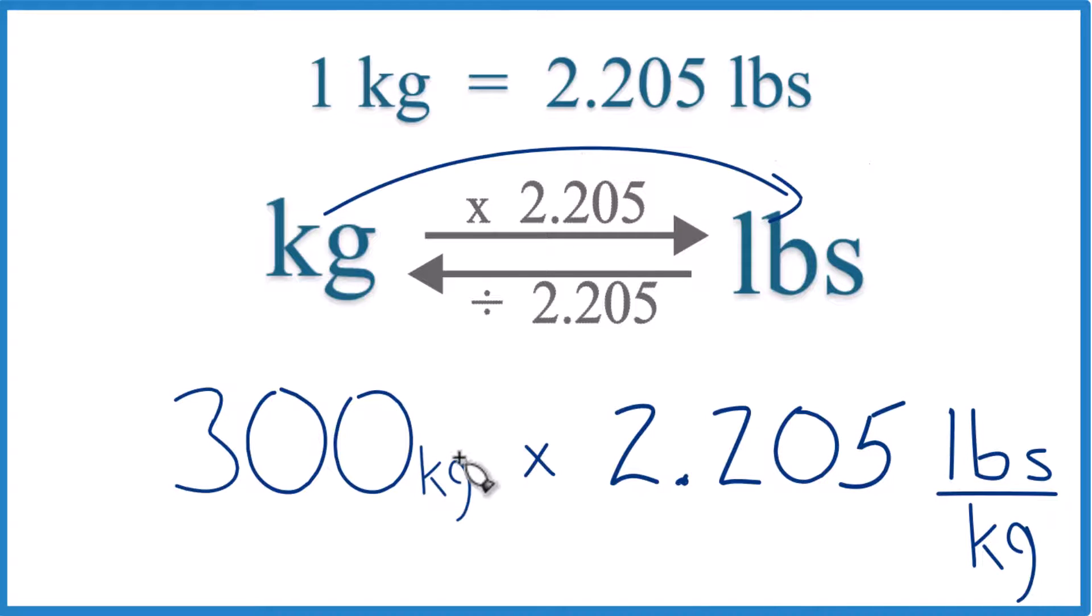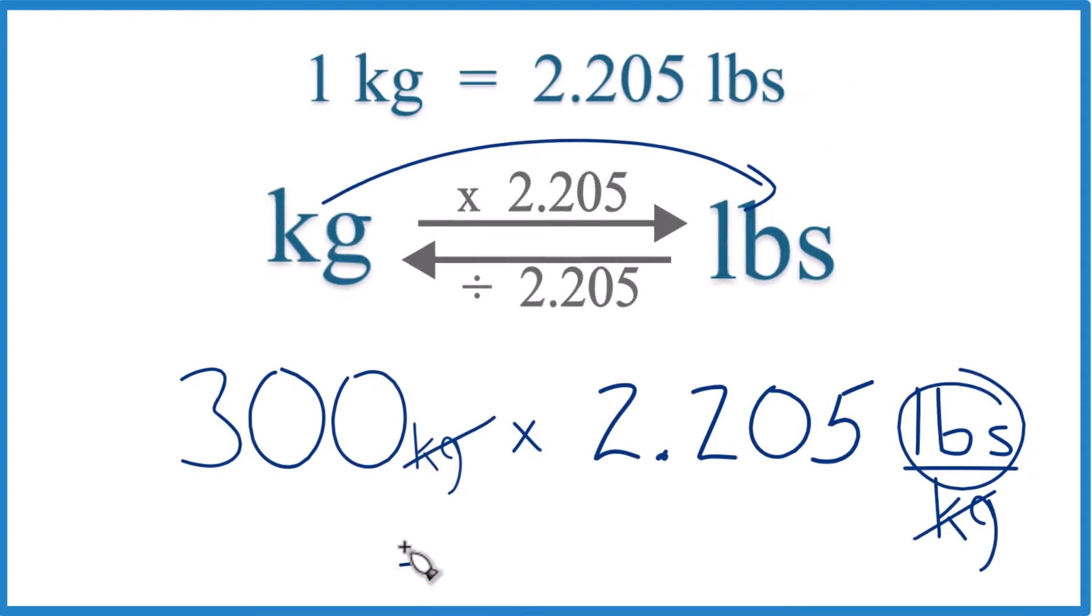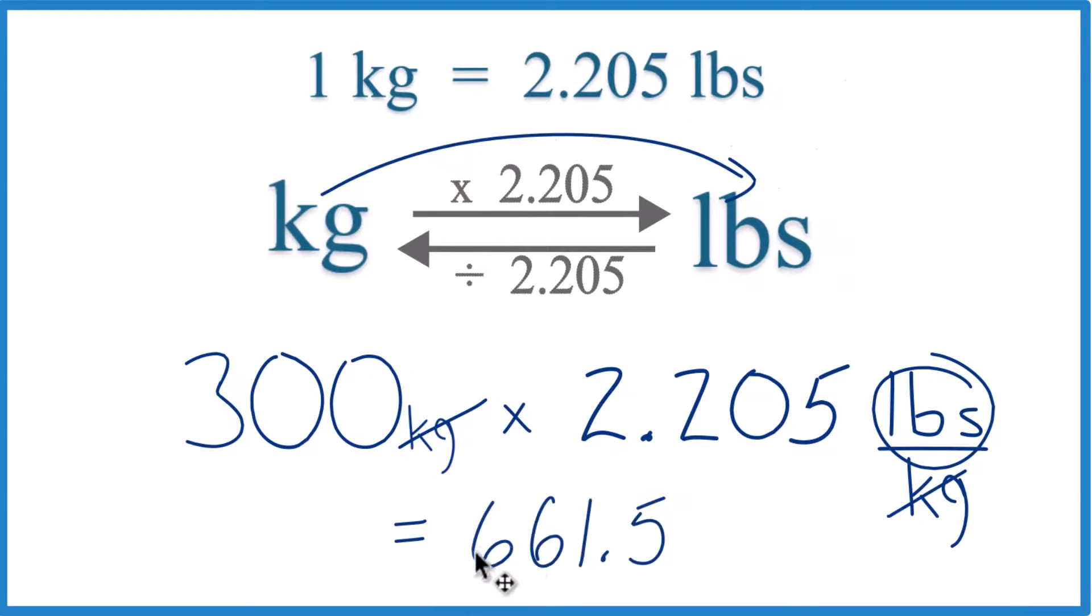Because now we multiply, we have kilograms on top and on the bottom. They cancel out. We're left with pounds. That's what we're looking for. So 300 times 2.205, that equals 661.5. We are going to pounds. Pounds is all that's left right here.